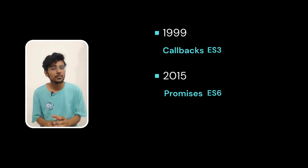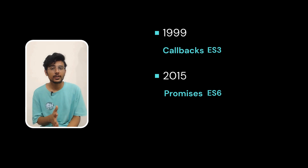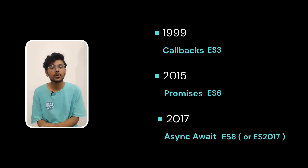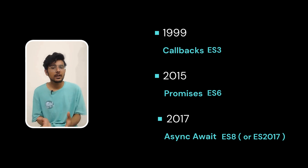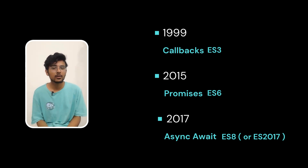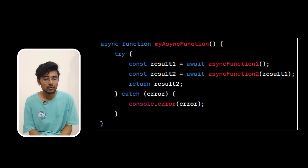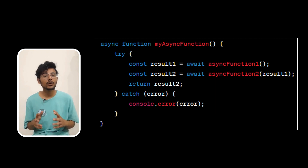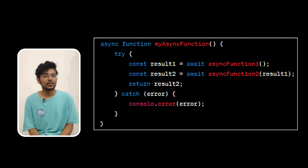I'm still not fully convinced because the code still looks slightly weird because of this chain of dot-then and dot-catch. So in 2017, async/await was introduced in JavaScript to make code look like synchronous-like code. The async keyword is used to create a function that returns a promise, and inside this function we use the await keyword. Now the code looks like synchronous-like code — that's cool, isn't it?